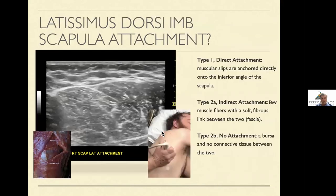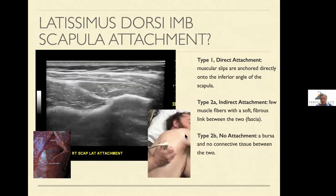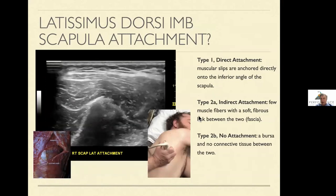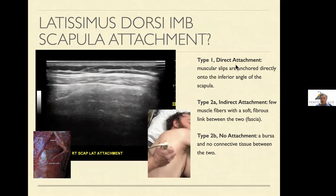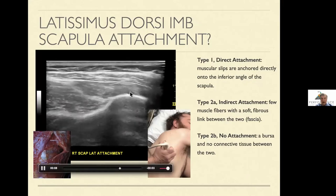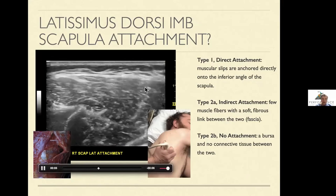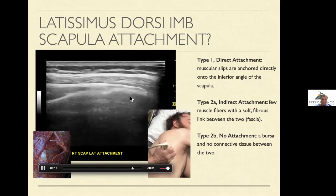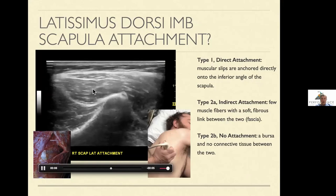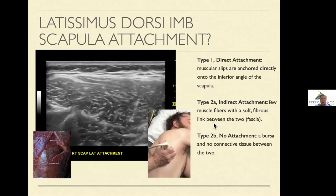Latissimus dorsi is the last thing in this basic protocol. In that same sidelying position, I pick up the latissimus dorsi and slide down to the inferior medial border. A high percentage of people — actually the greatest percentage — have some type of attachment to the inferior medial border, either a direct type 1 or indirect type 2. If you have this attachment, you are less likely to have shoulder instability. Frequently, you can see tears of the latissimus as it inserts into this area. Practice following latissimus fibers all the way down to the lumbar spine, as well as trapezial fibers to the thoracic spine.